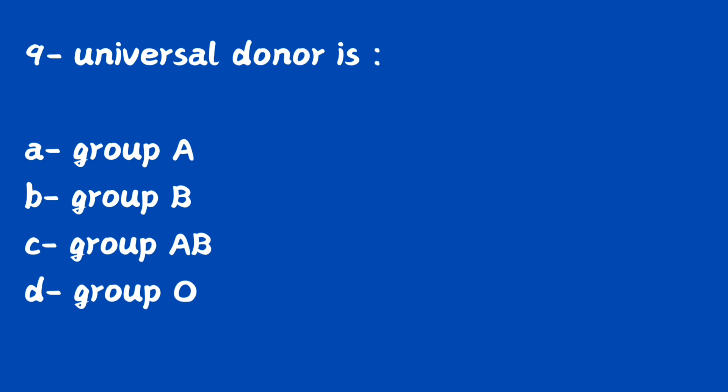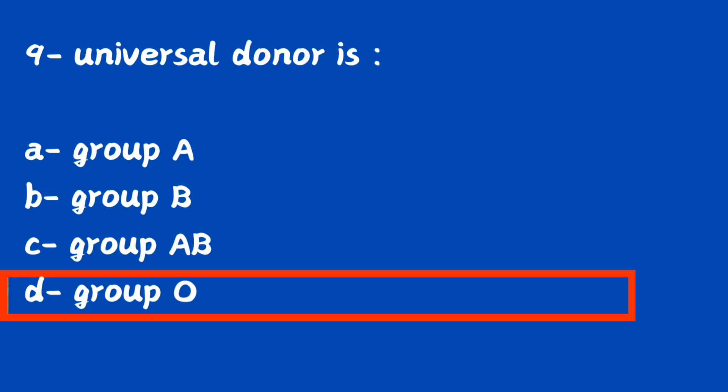Question number 9. Universal donor is: option A, group A; option B, group B; option C, AB group; option D, O group. Which of the following is known as the universal donor? The right answer is option D, O group. O group is known as the universal blood donor.